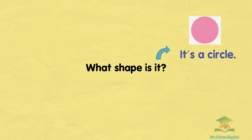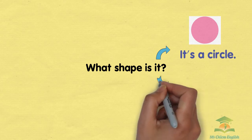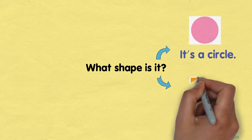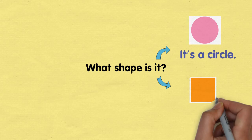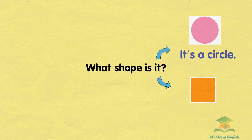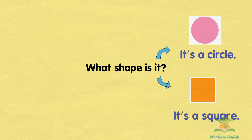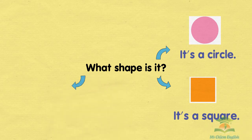It's a circle. What shape is it? It's a square. What shape is it?